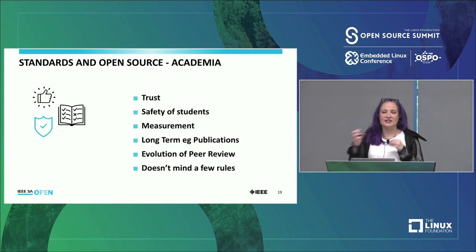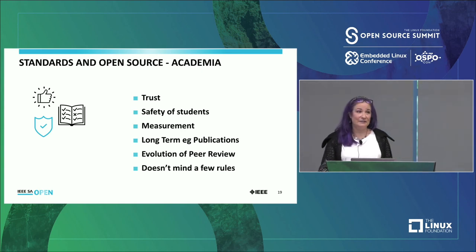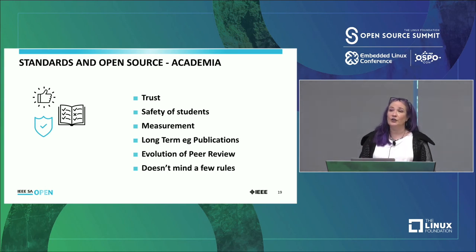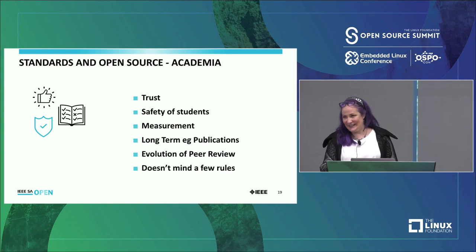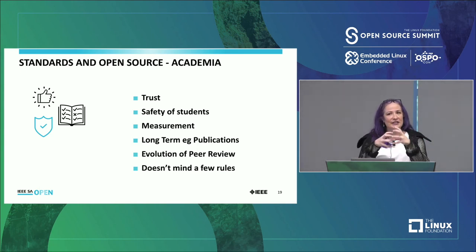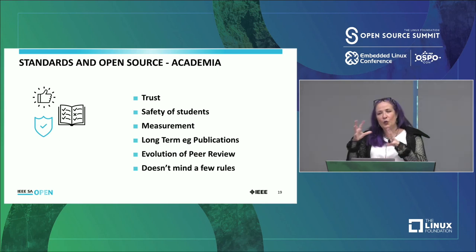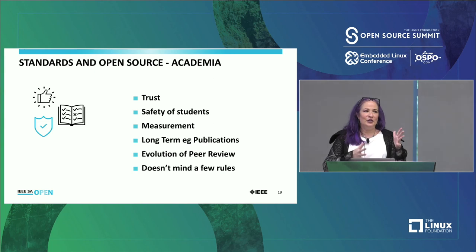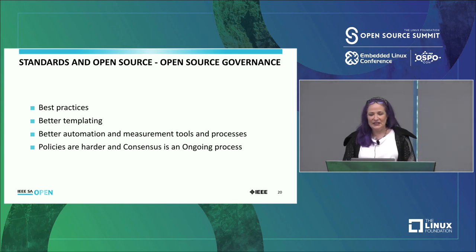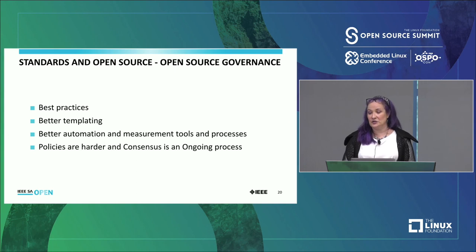Similarities between standards, open source, and academia include trust, caring a lot about the safety of students, measurement and the diversity of measurement. We have a long-term view in regards to publications — our data needs to be there decades from now. And it's not just about the data, it's about the community. If we don't have that community aspect and a sustainable path for it, it's not going to work long-term. We're also evolving peer review right now — the academia model of one-and-done doesn't work in this new world. We need different and better processes for that. And academia doesn't mind a few rules — they're already used to it. So some of the things we're doing include best practices, better templating, automation, measurement tools, and working on policies to reach consensus.